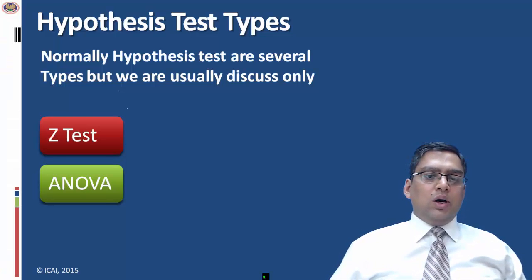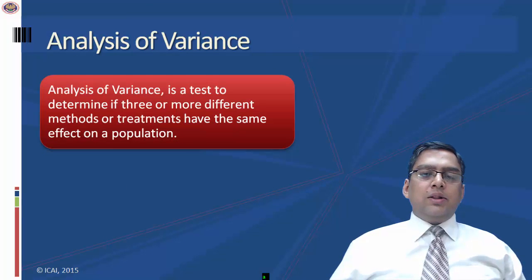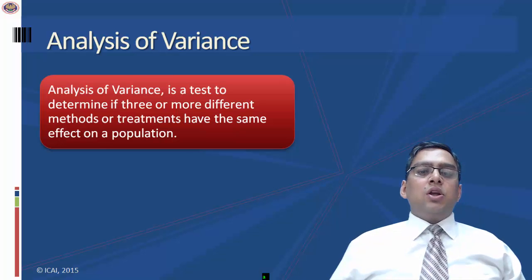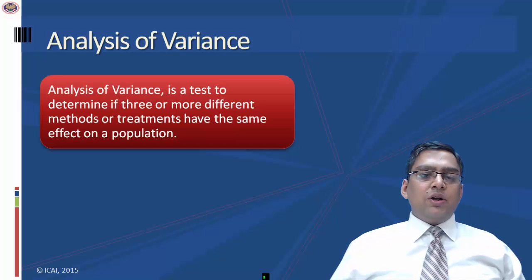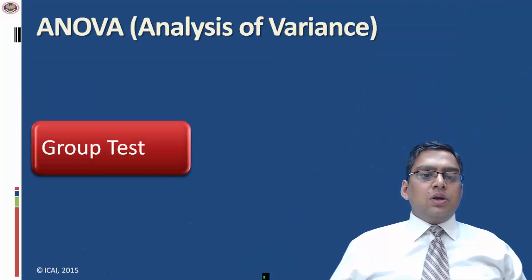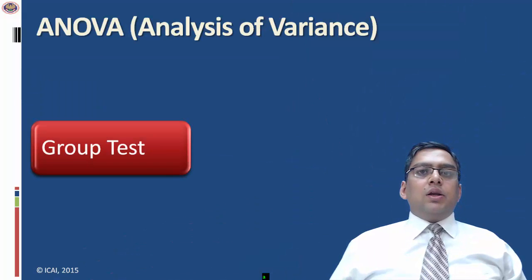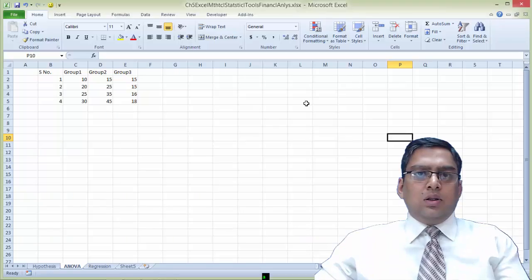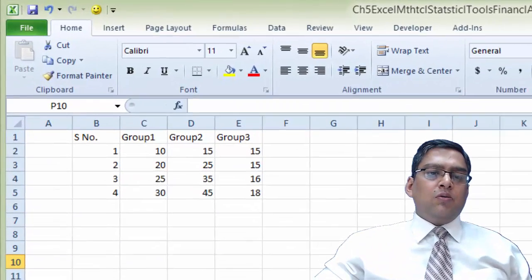The second topic is ANOVA, which stands for Analysis of Variance. ANOVA is a test to determine if three or more different methods or treatments have the same effect on a population. It is a group test. Let's take an example.